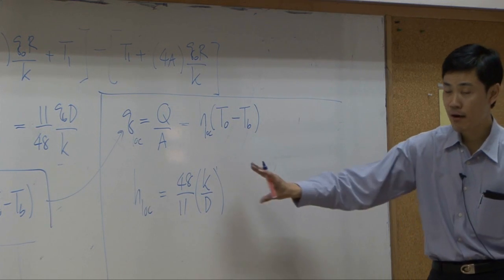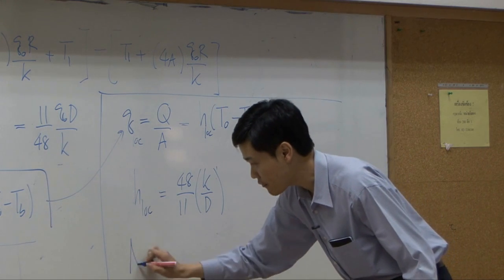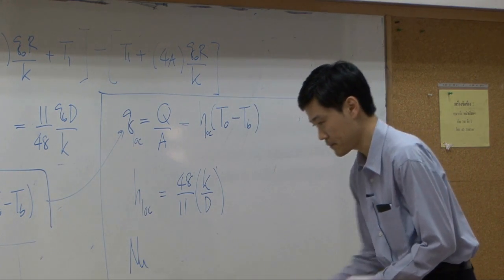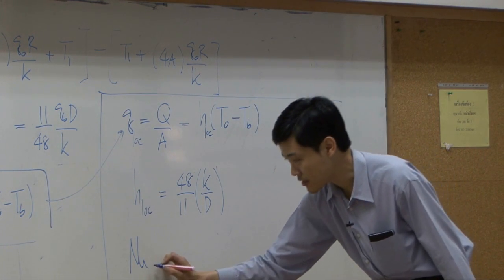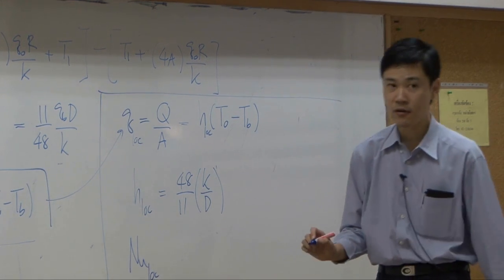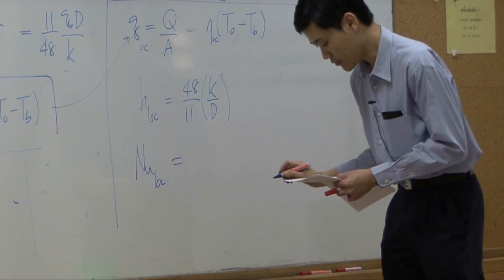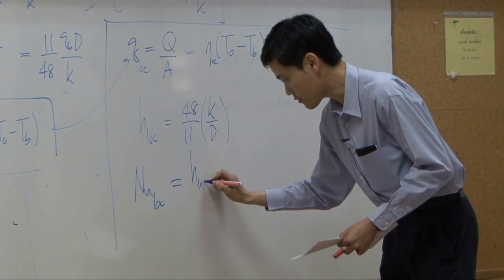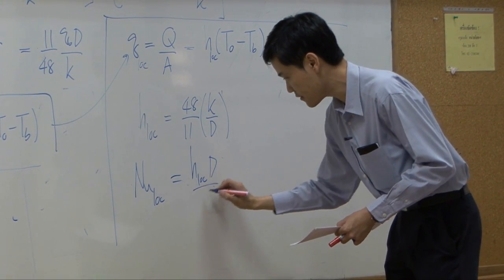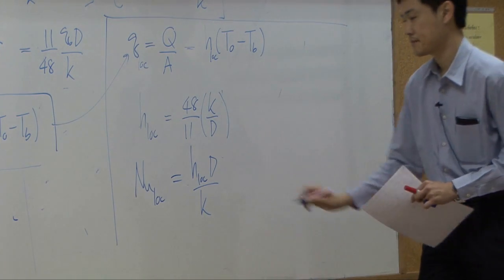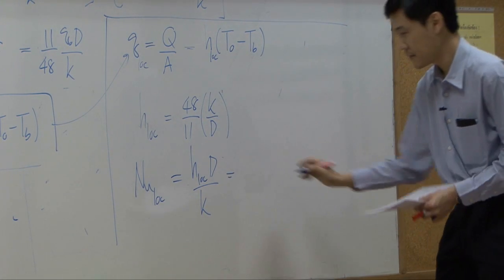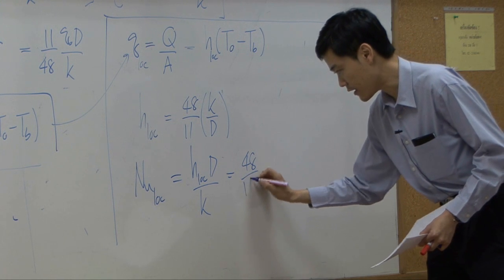From heat transfer coefficient, then you can calculate Nusselt number. In this case, Nusselt number is calculated locally. So that would be Nusselt number local, equal to H local D over K. Plug this part back in here. You'll get 48 over 11.